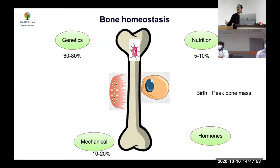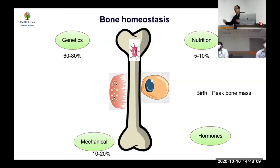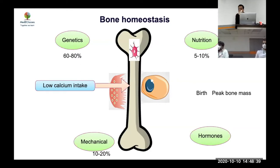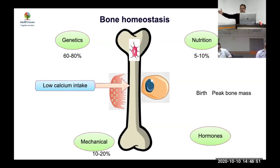Returning to the bone mass example: peak bone mass is regulated by multiple factors — genetics (60–80%), physical activity (10–20%), nutrition, and hormones. The hypothesis is that low calcium intake decreases peak bone mass. But calcium intake may be associated with nutrition and physical activity, and calcium also influences hormones that affect bone — there are confounders throughout.